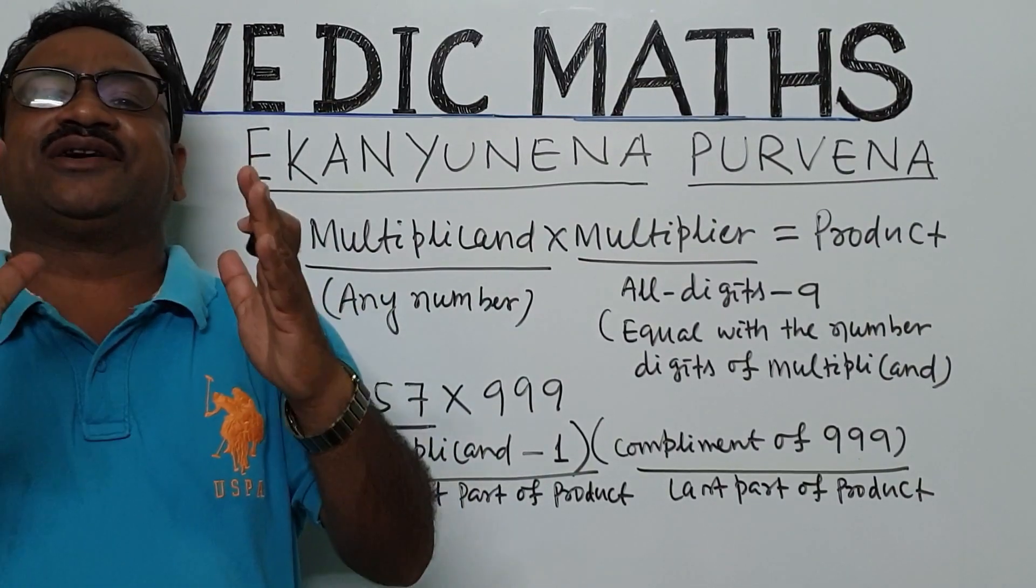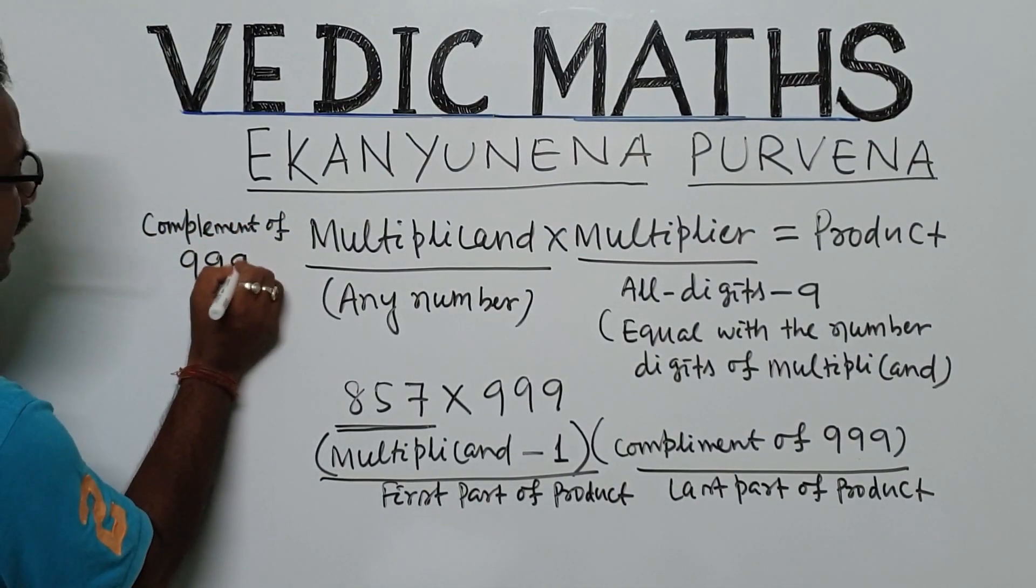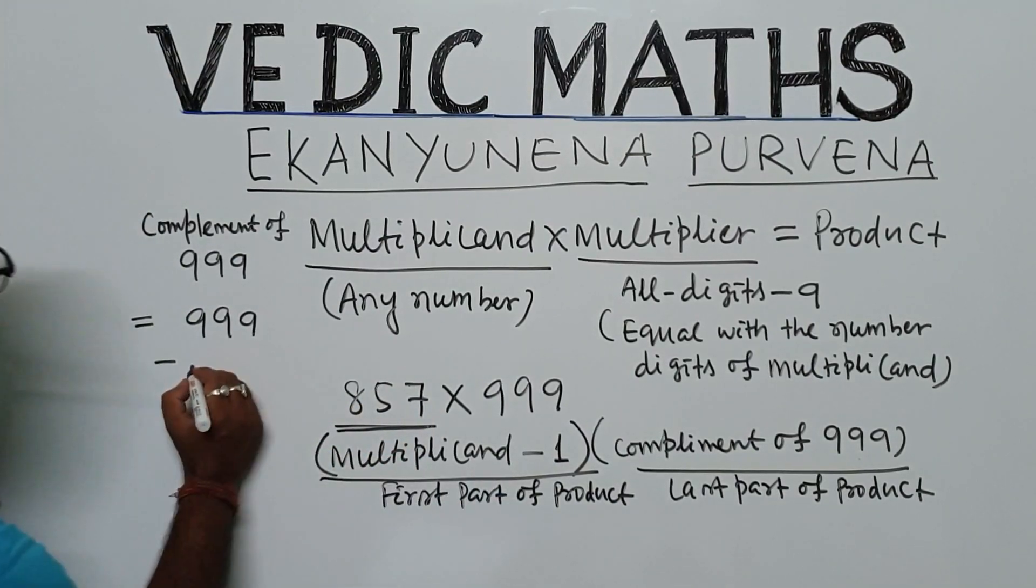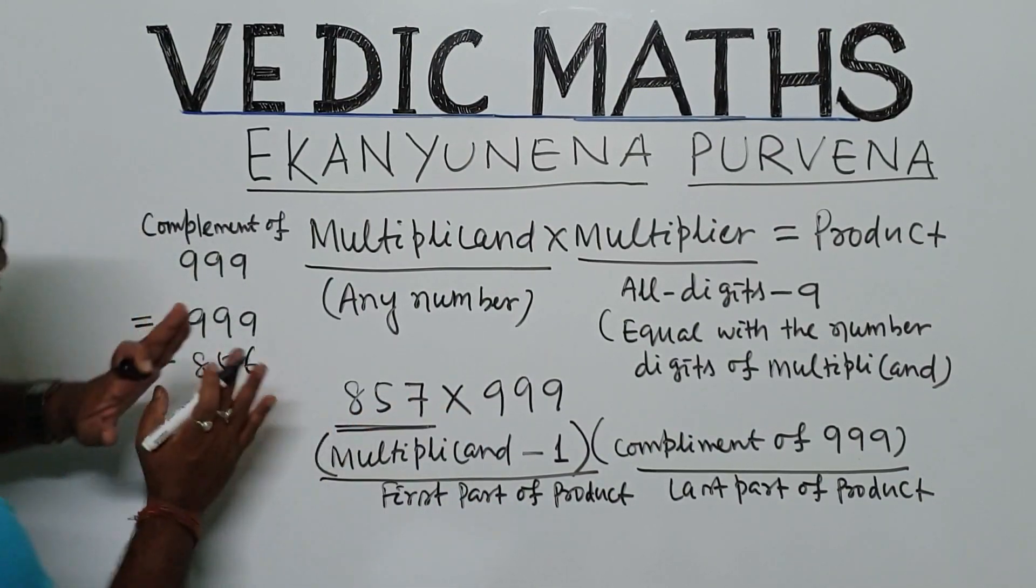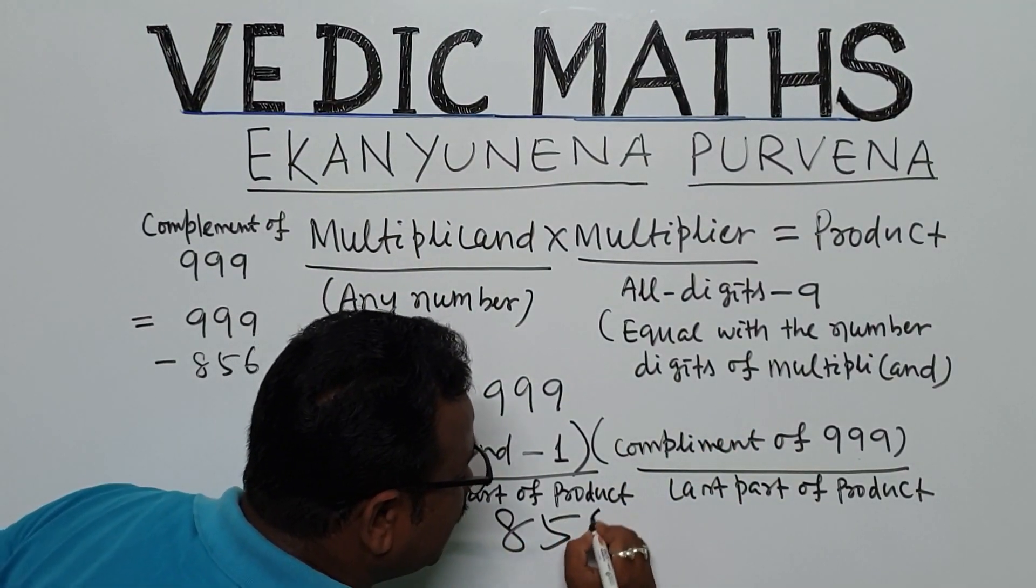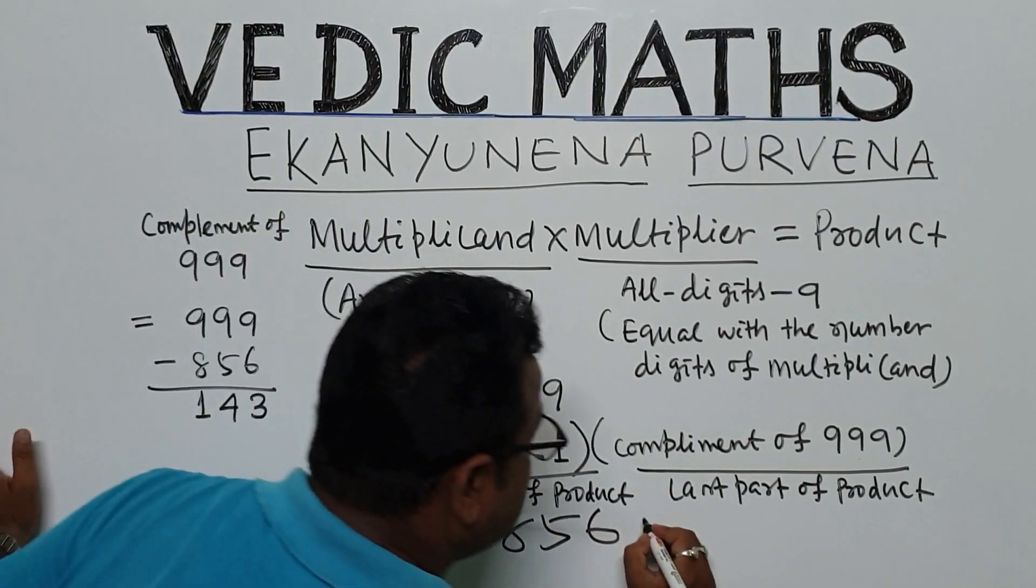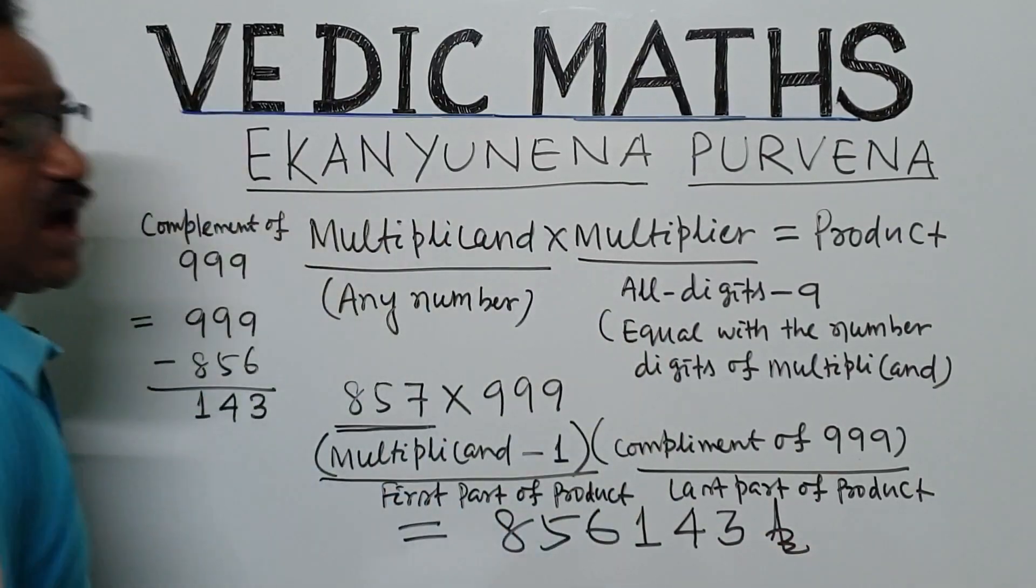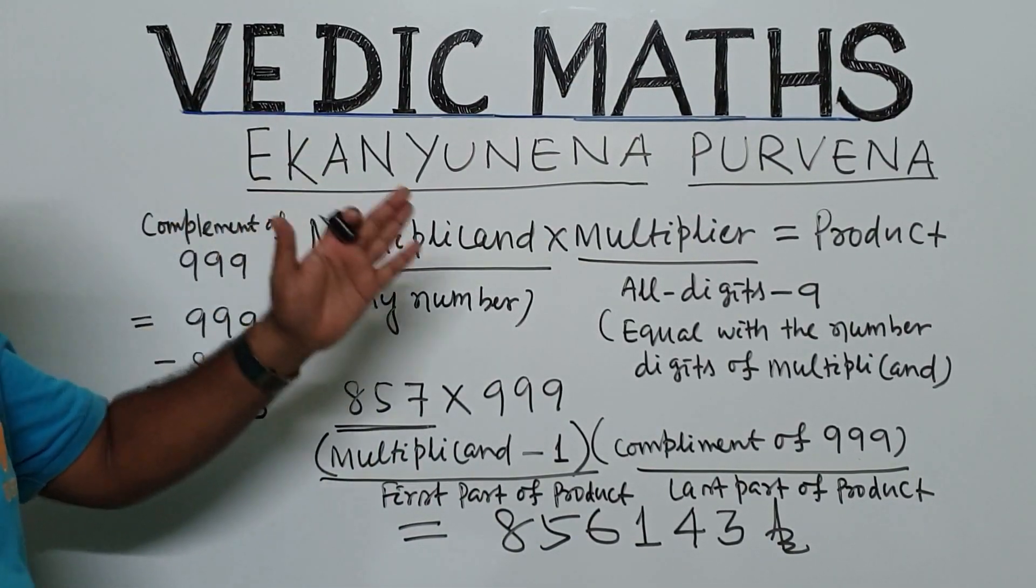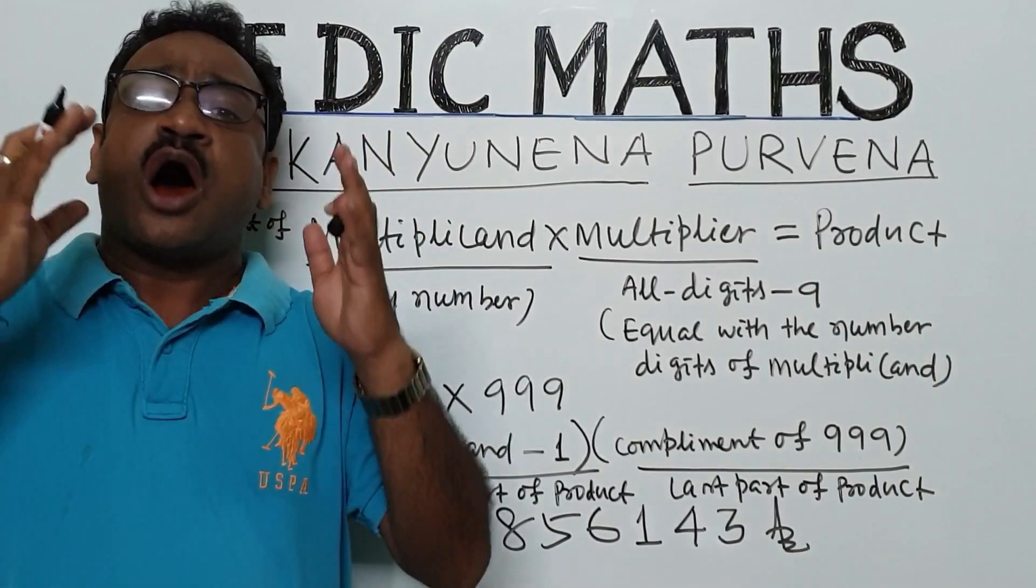What is the complement of 999? Complement of 999 is equal to 999 minus this number reduced by 1, 856. This is your 857 reduced by 1 gives 856. We are getting here 143. Then we are getting here 3,4,1. So last part is 1,4,3. This is the answer of the multiplication of 857 and 999. By applying Ekanyunyena Purveno sutra, we have done it very quickly. I hope that this will help you for faster calculation of multiplication.